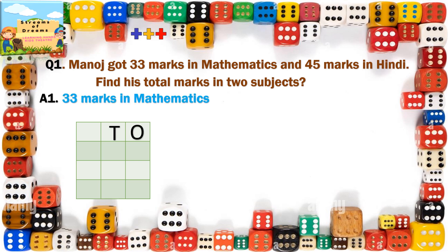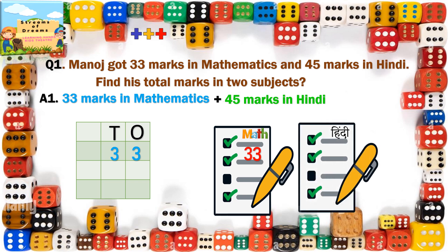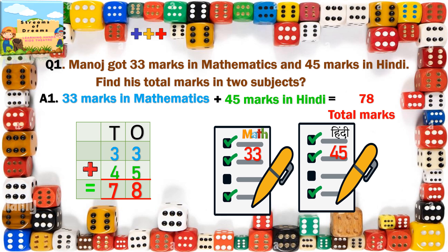33 marks in mathematics — writing 33. And 45 marks in Hindi — writing 45. So we are adding 45 to 33. 3 in your mind, 5 in your fingers. Let's begin with your right side — 8 will be the answer. And 3 in your mind and 4 in your fingers — 7 will be the answer. So you will write 78 total marks.